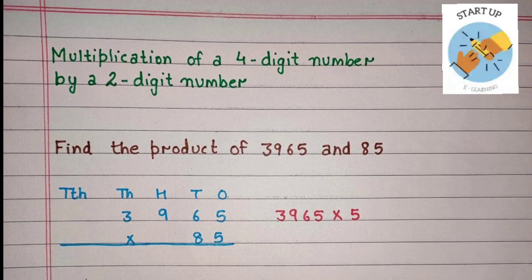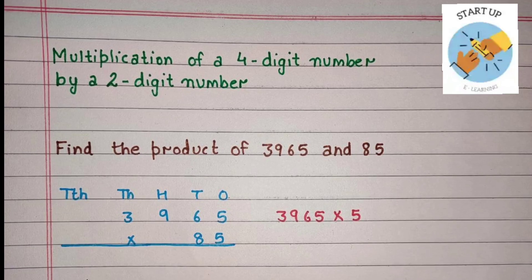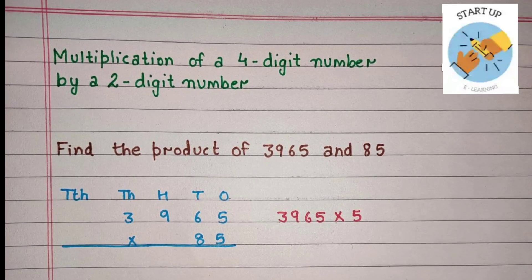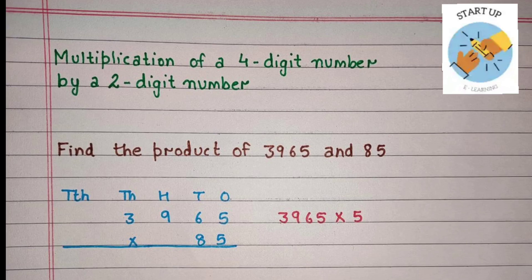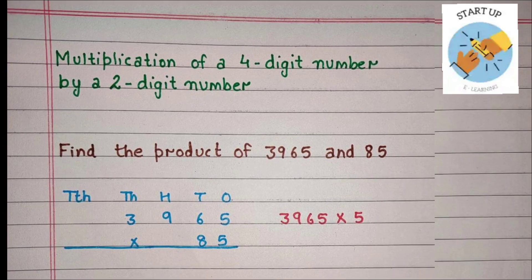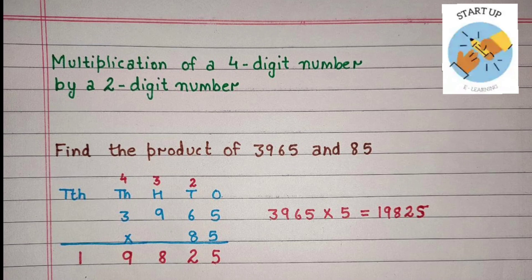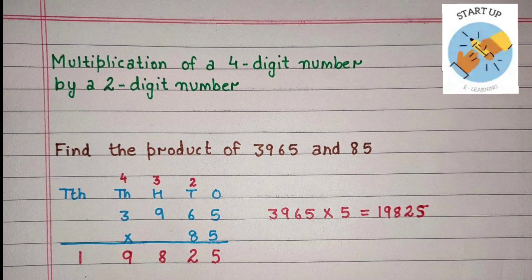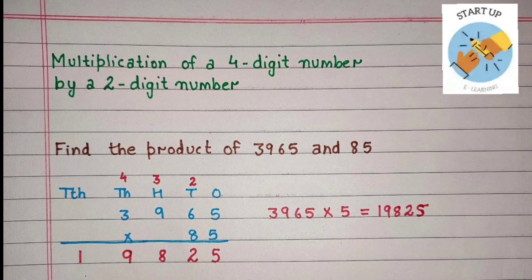We always start our multiplication from the 1's place. So first, 3,965 will be multiplied by 5. Let's start solving it. 5 multiplied by 5 — the digit at the 1's place — 5 fives are 25. 5 will be written under the 1's place and 2 will be carried to the 10's place.